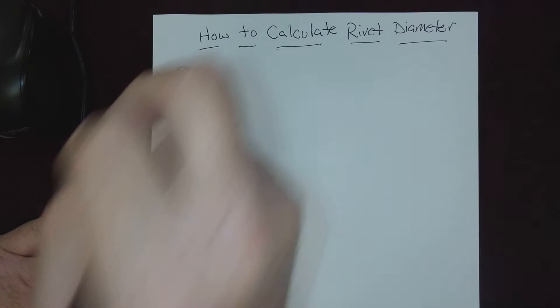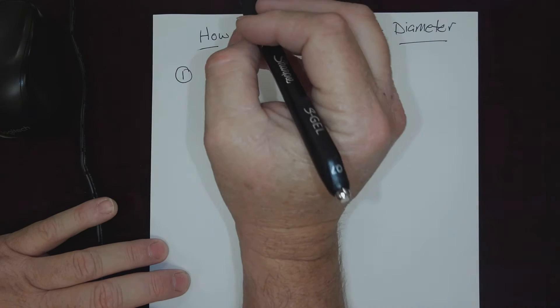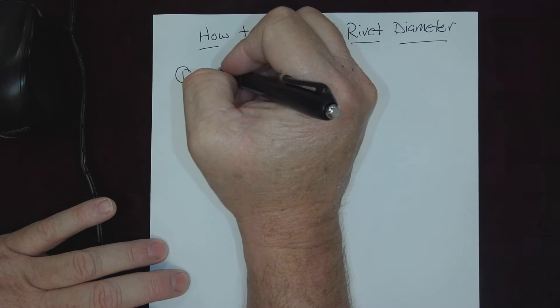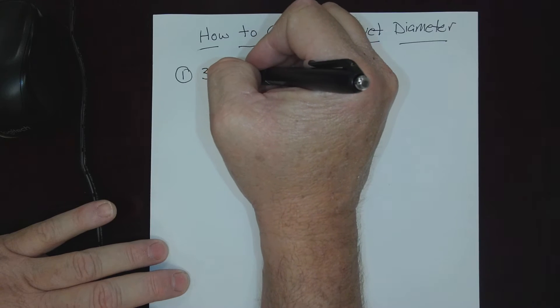Rule number one: we always look for the diameter first, and here's how you calculate the diameter. Here is your rule - we always say three times the thickest sheet in the stack-up.